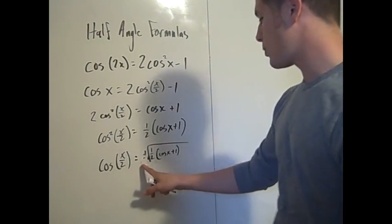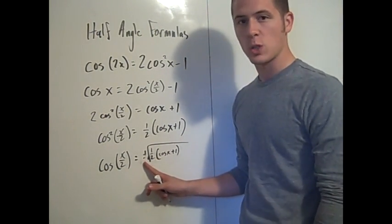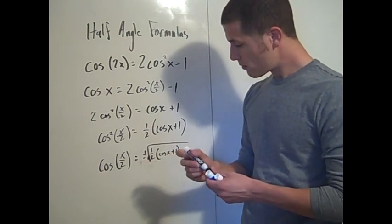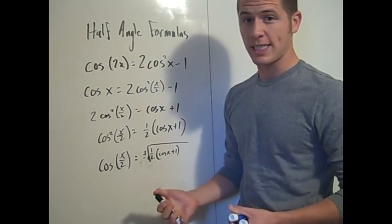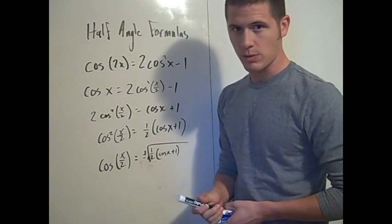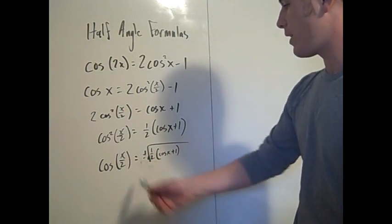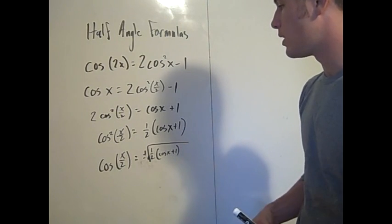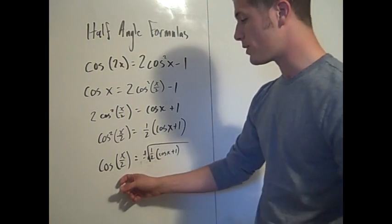The plus or minus depends on which quadrant you're in. Sometimes cosine is positive depending on the quadrant, and sometimes it's negative depending on the quadrant. That's the half angle formula for cosine.